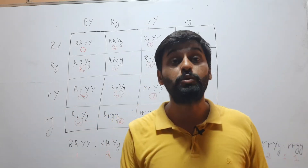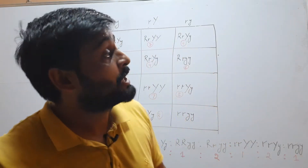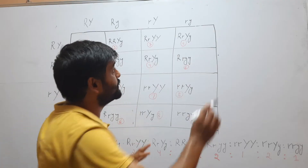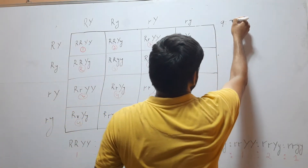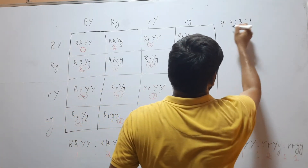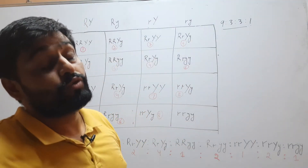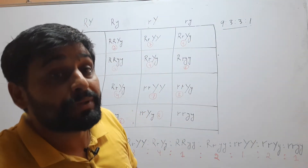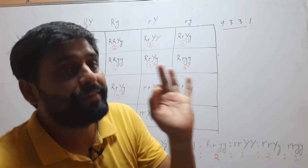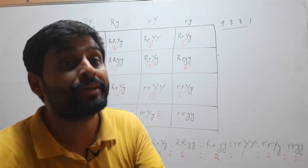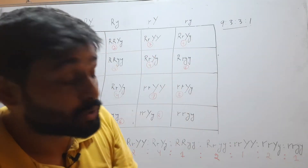Hello friends, welcome to my YouTube channel. We know that the phenotypic ratio of a dihybrid cross is 9:3:3:1. What will be the xenotypic ratio, or what is the xenotypic ratio of a dihybrid cross? In this video, we will discuss the xenotypic ratio of a dihybrid cross.